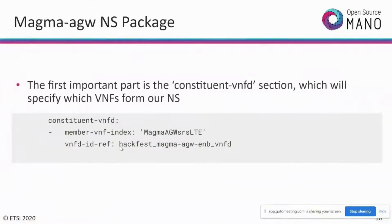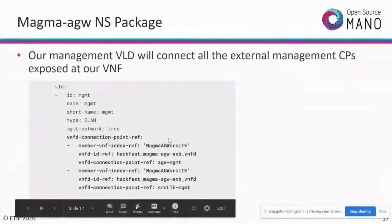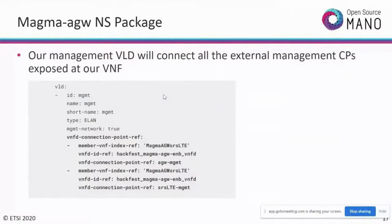The second part is the networking details — how to connect all VNFs. The access gateway VNF has both a management network and an SGI network to connect to the router. In the VLD section, you'll find a management network name. The VNF connection point reference is an important element that identifies which connection points my external virtual link should use. Both management connection points from the VNF are referenced here.